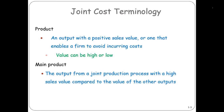A main product is the purpose of your production processes — it may be more than one main product. Coming out of crude oil is more than one main product. Any product is anything that has a positive sales value. The value can be high or low. So scrap is, in fact, a product. Byproducts are products too.